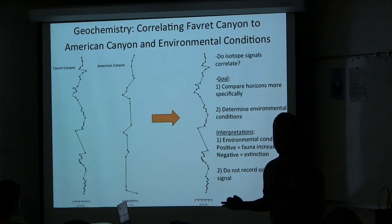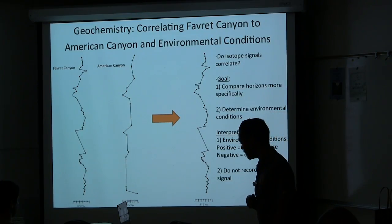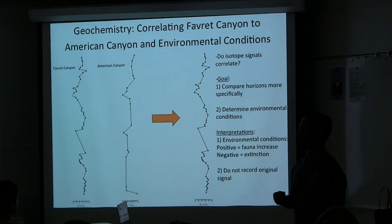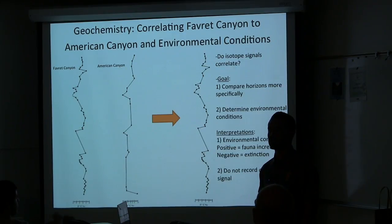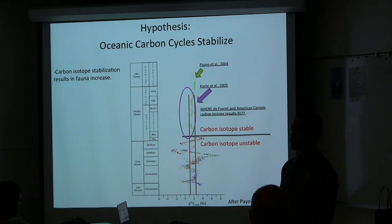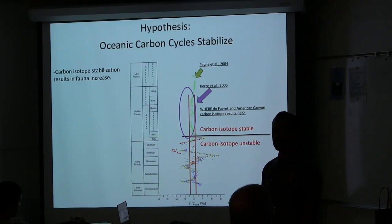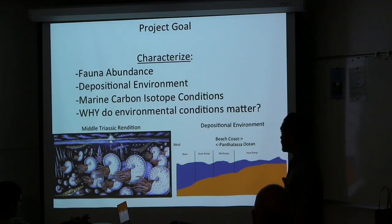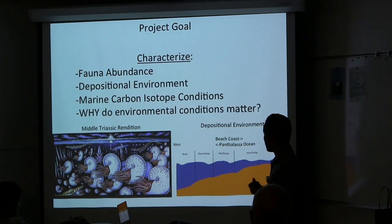Another interpretation of carbon isotopes is that they do not record their original signal because they have undergone diagenesis — change from their original values. Therefore, if isotopes did undergo diagenesis, they can't be used for the purposes of this study. I hypothesize that marine carbon isotopes in Fabric and American Canyon stabilize and result in abundant fauna, based on work by Payne and Cortet who suggest that fauna increase as carbon conditions stabilize.